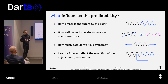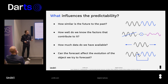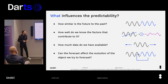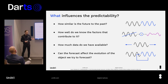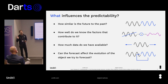What influences the predictability of a time series? The most important thing is how similar the future is to the past — the more similar it is, the easier it is to forecast. Also, how well do we know the factors that contribute to this time series? If you knew a curve was just a multiplication of a sine wave and a linear curve, it would be very easily predictable. Another question: how much data do we have available? As in any machine learning task, the more data, the better the model can learn. And crucially, does the forecast itself affect the evolution of what we're trying to forecast? Think about if everyone could perfectly predict the stock price for tomorrow — then the stock price will probably not be the same tomorrow.